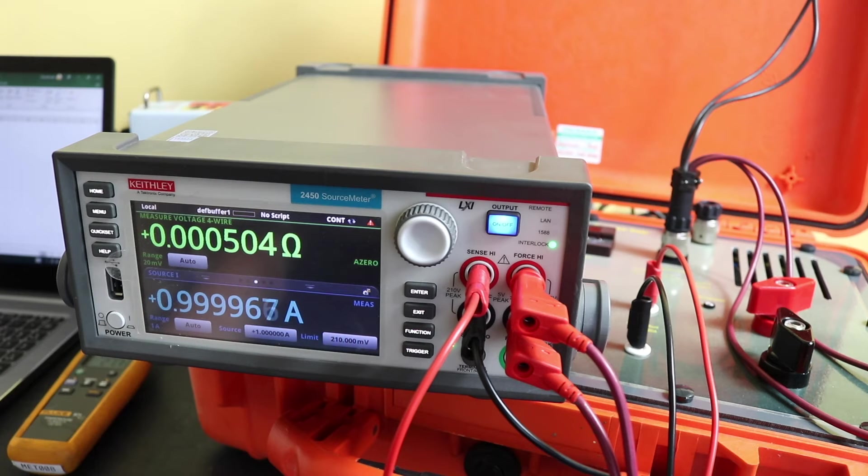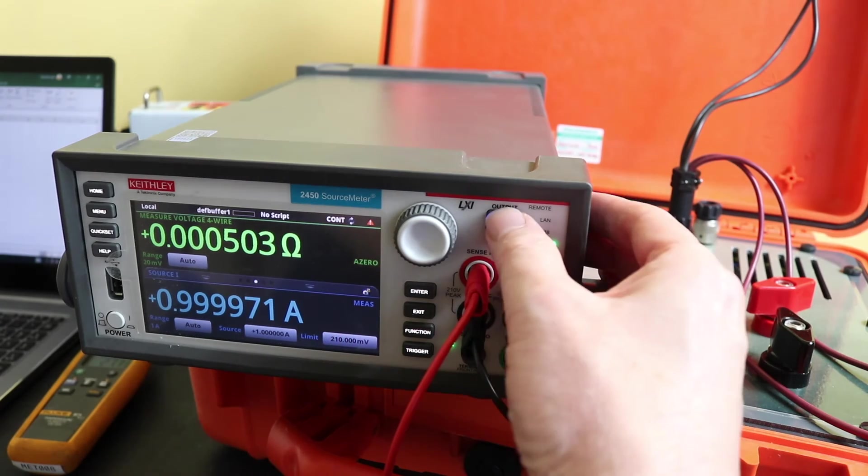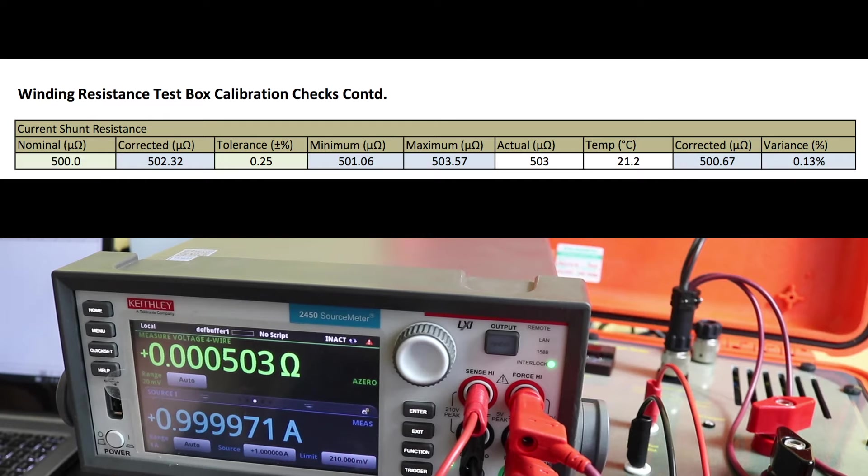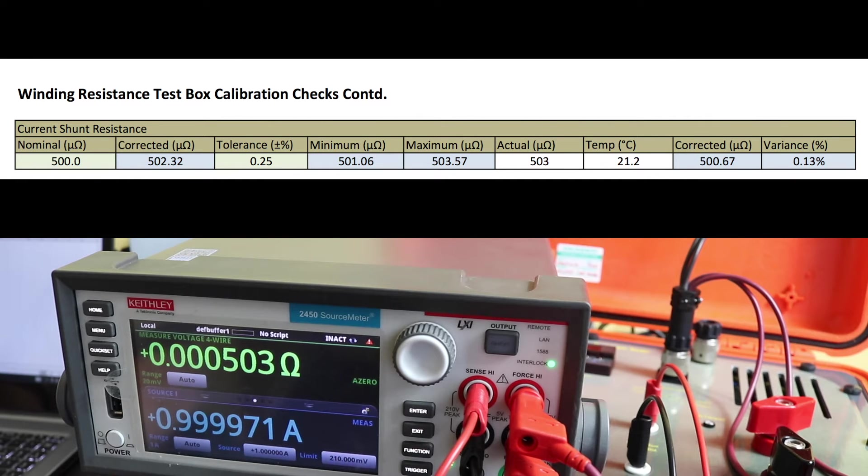What I will actually do is feed that value back into my test sheet and temperature correct this resistance reading I've got from the 2450 to the nominal value, so I can get a more accurate comparison. I'll put this little snippet of the calibration sheet up here. You can see that the winding resistance box should be nominal 500 microohms. The actual reading I got was 503, and temperature corrected to 21.2 degrees C, which is what I read from my Fluke, it is 500.67 microohms, and that gives me a variance of 0.13%, so that's within the 0.25% nominal tolerance.